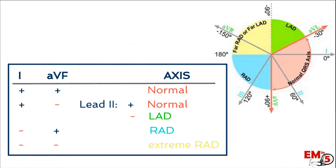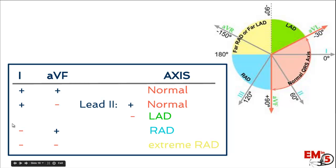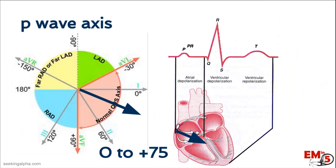Here's a quick summary table. The two leads for QRS axis determination are leads 1 and AVF. If positive in 1 and positive in AVF, that's a normal QRS axis. If anything is negative in lead 1, that's abnormal. The tricky case is positive in 1 and negative in AVF — you're up in that upper quadrant — so you must look at lead 2. If lead 2 is positive, that's a normal axis.